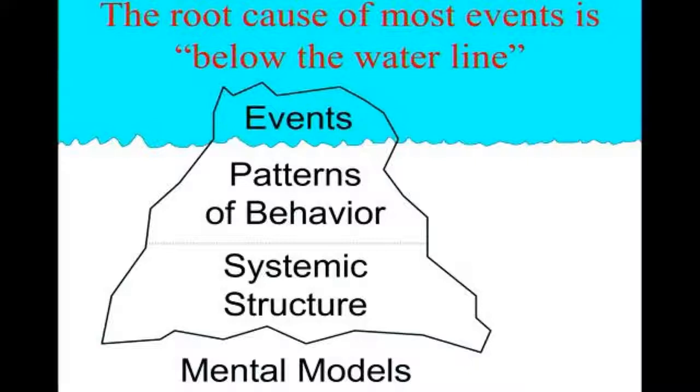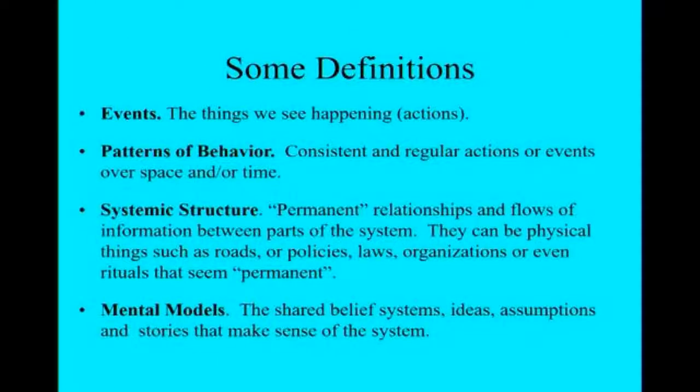Here, the mental model suggests that we should stop at traffic lights. The structure is both the traffic light itself, as well as the laws that penalize you when you don't stop at traffic lights. And the mental models are, perhaps we can all be better off being safe and paying attention to some rules. It's good for all of us. And so these definitions begin to help us understand the relationship between events, patterns, structures, and mental models.